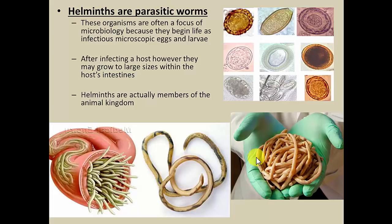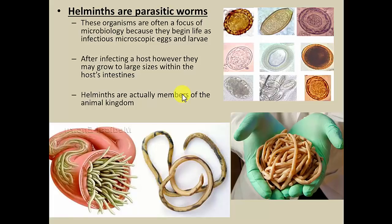In the fully developed adult life stage, helminths are really not microscopic at all — they can actually become really large. The reason they're studied in microbiology is because when they're infectious, they are microscopic, typically at the life stage of the egg and or the larvae. You would not be infected at the adult stage when these worms are large and grotesque — you would be infected at the microscopic stage when the worm is invisible to you. These are actually part of the animal kingdom, one of the only microbes from the animal kingdom that we'll study here.